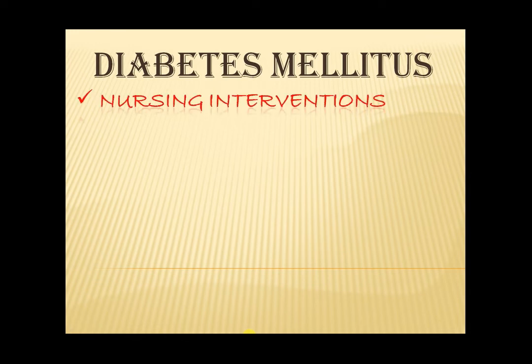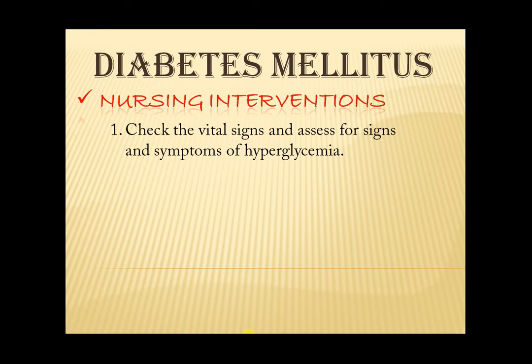Let's now proceed to nursing interventions. First, check the vital signs and assess for signs and symptoms of hyperglycemia. Check the patient's blood sugar level as ordered. Inform the physician if there is any significant findings with the blood glucose level result.